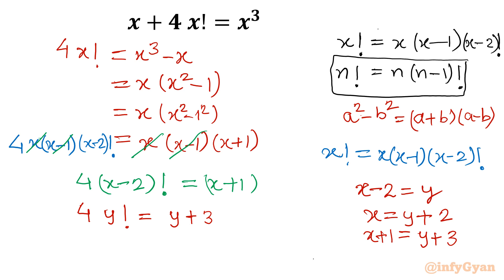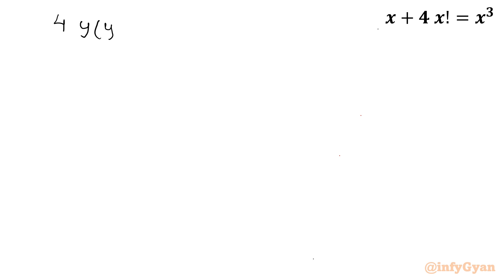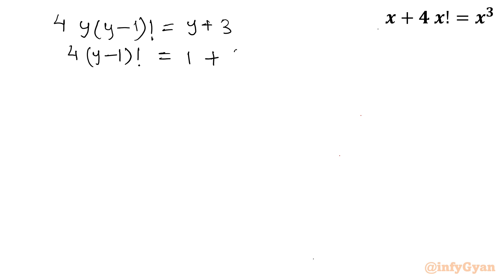Again using the recursive formula, I write y! as y times (y−1)!. The right side remains y+3. Now I divide the complete equation by y, giving us 4·(y−1)! = 1 + 3/y.